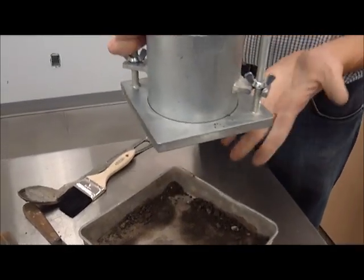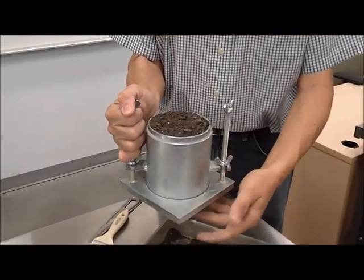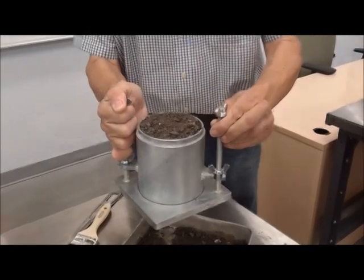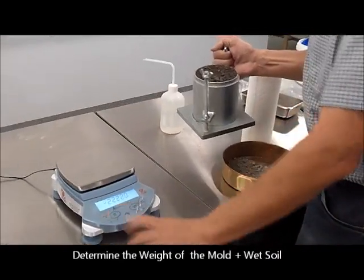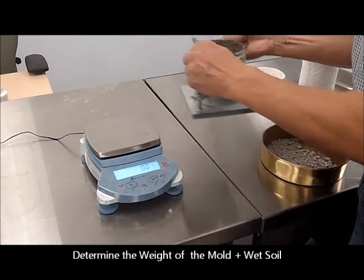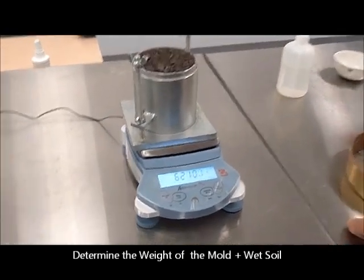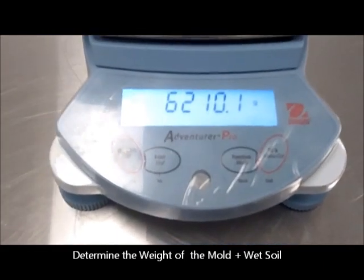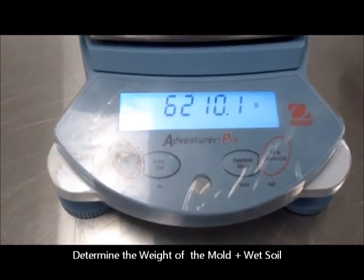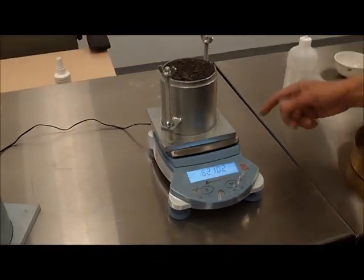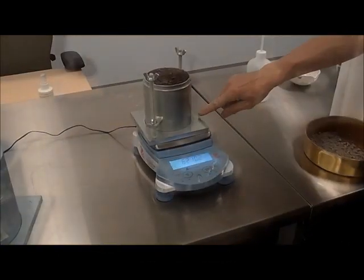And at this point, we have the mold plus the wet soil ready to be tested. So again, we zero our scale, and we determine the weight of the compacted wet soil plus the empty mold. The two together add up to a given weight.